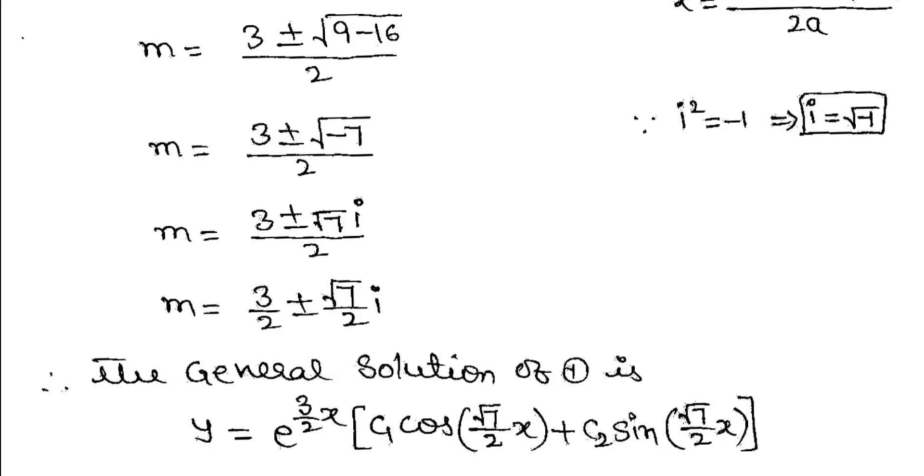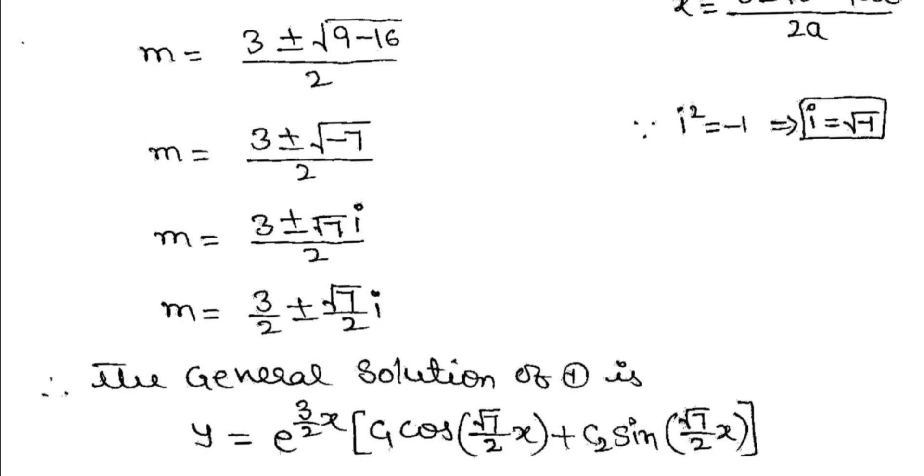So the general solution of equation 1 is: y = e^(3x/2) × [C1·cos(√7x/2) + C2·sin(√7x/2)]. This is the general solution of the given differential equation. I hope you all understand. Thank you for watching. Good luck.